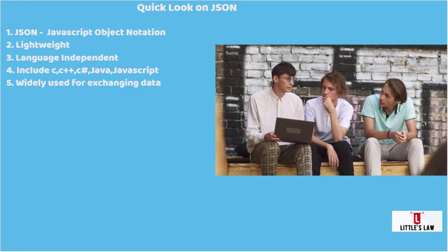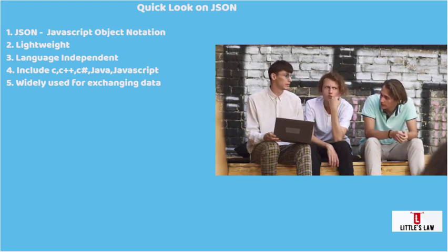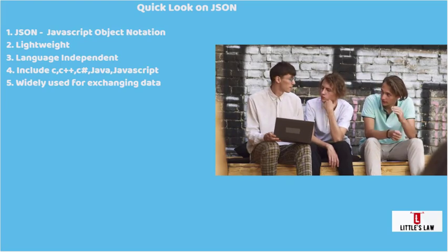JSON is used because it is lightweight and easy to read, allowing for faster parsing times. JSON data is often used in Ajax-based applications as well as in APIs which allow applications to communicate with each other. In short, JSON provides a simple, efficient, and flexible way to store and exchange data between different systems and programming languages.